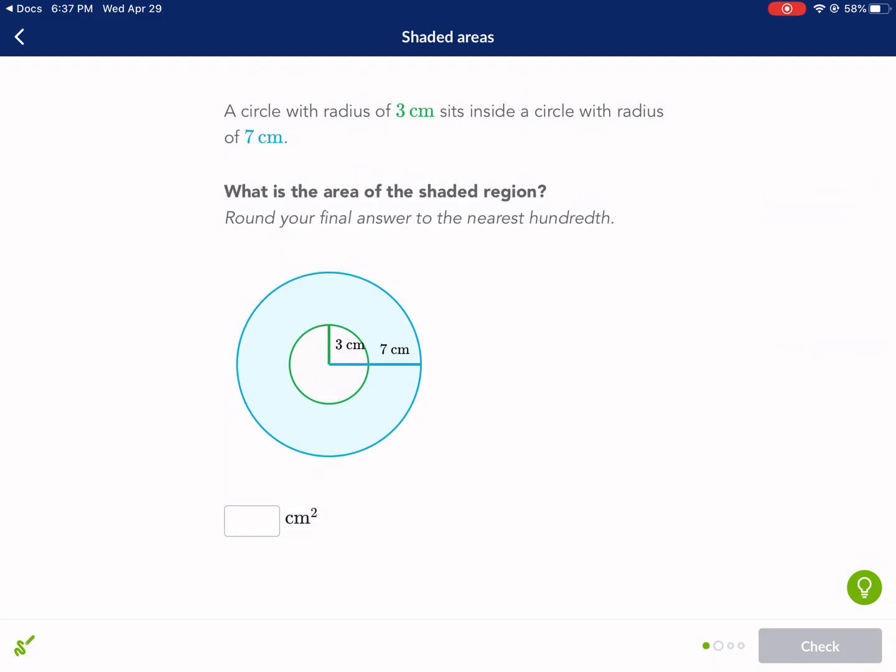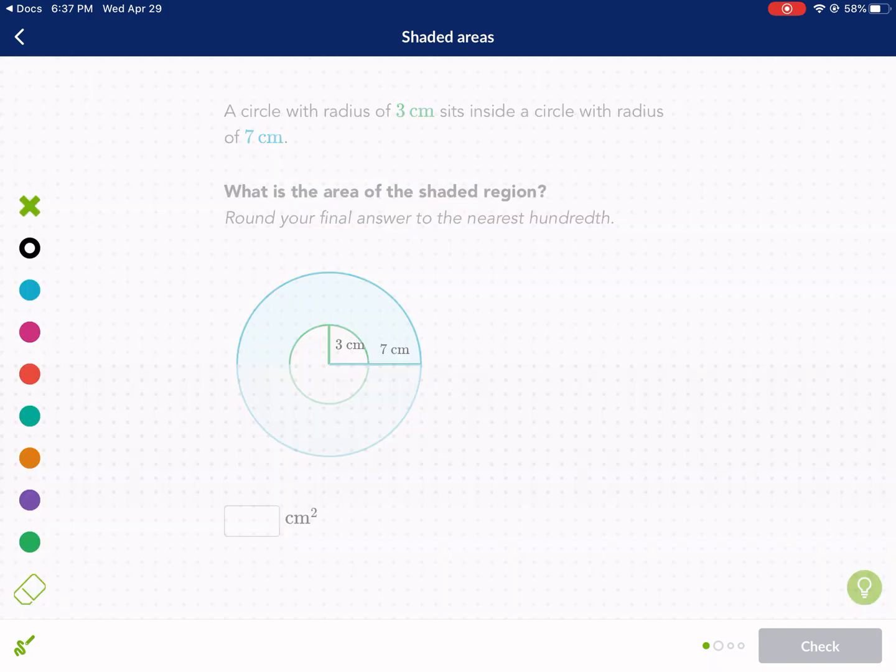All right, now on to the next one. A circle with radius three centimeters sits inside a circle with radius seven. What is the area of the shaded region? Okay, same process. We're going to take the area of the big one minus the area of the small one that's not shaded to give us the area that we want.